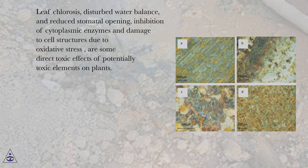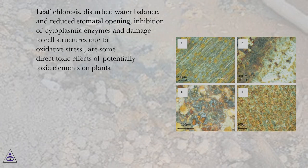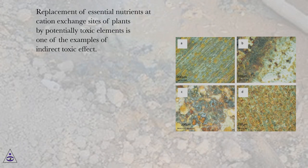Leaf chlorosis, disturbed water balance, and reduced stomatal opening, inhibition of cytoplasmic enzymes, and damage to cell structures due to oxidative stress are some direct toxic effects of potentially toxic elements on plants. Replacement of essential nutrients at cation exchange sites of plants by potentially toxic elements is one example of an indirect toxic effect.